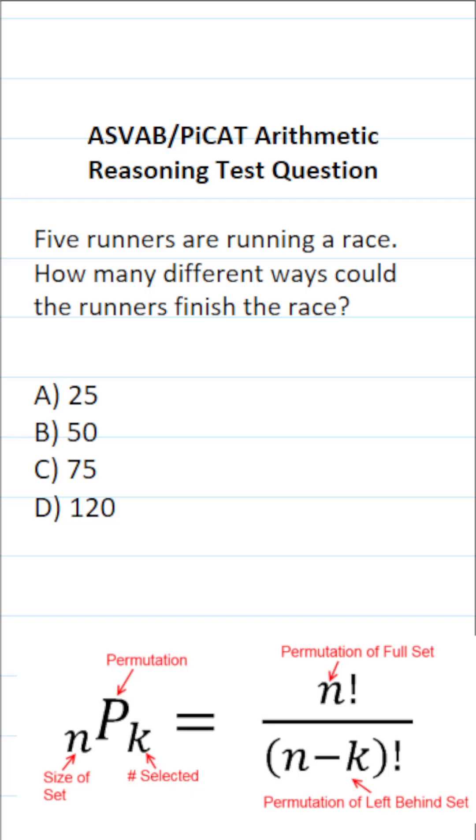This arithmetic reasoning practice test question for the ASVAB and PICAT says five runners are running a race. How many different ways could the runners finish the race? So as it happens, this is a permutation problem because we're concerned about the order in which the runners finish the race.